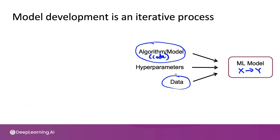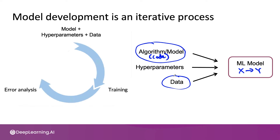Model development is a highly iterative process. You usually start off with some model, hyperparameters, and data; train a model; and then carry out error analysis to help you decide how to improve the model, the hyperparameters, or the data. Because machine learning is such an empirical process, being able to go through this loop many times very quickly is key to improving performance.